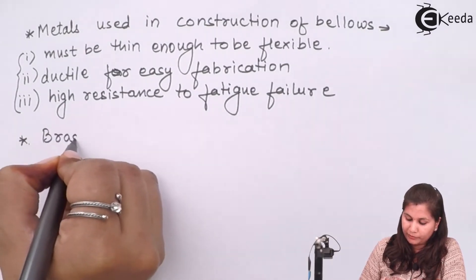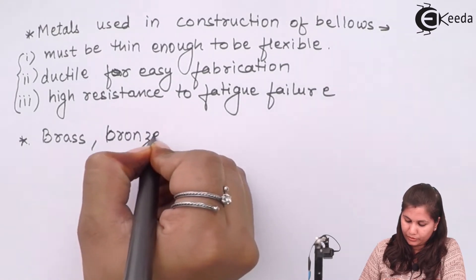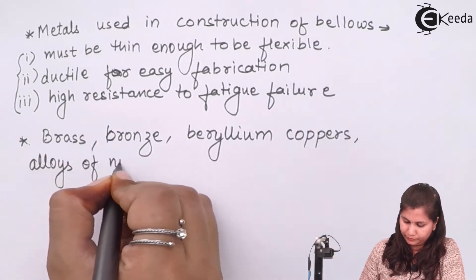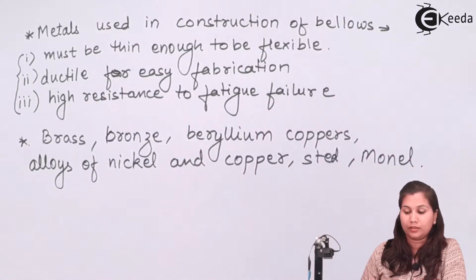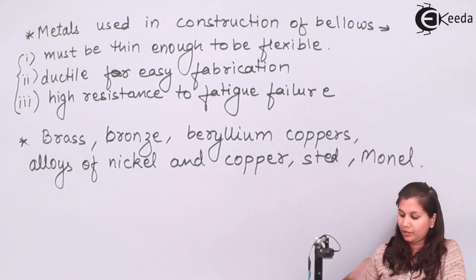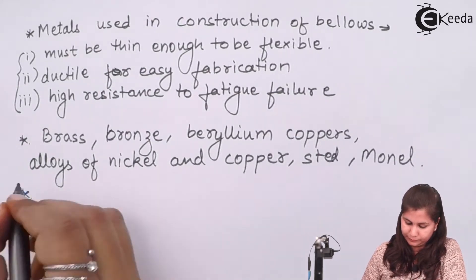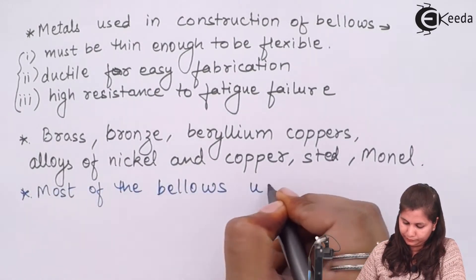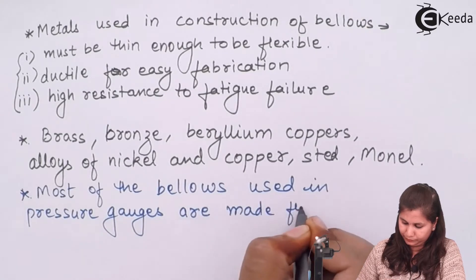The materials which are commonly used for the construction of bellows are brass, bronze, beryllium copper, alloys of nickel and copper, steel, and monel. So these are the materials which are commonly used for the construction of bellows.